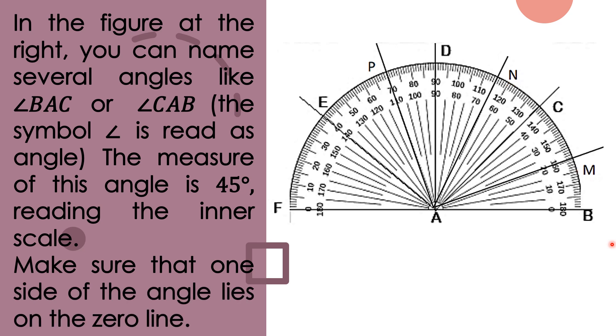Make sure that one side of the angle lies on the zero line. When drawing an angle, one ray must be aligned with zero. Some protractors have space here, so they draw the line there. That is wrong. The initial side or first ray must be aligned with zero.